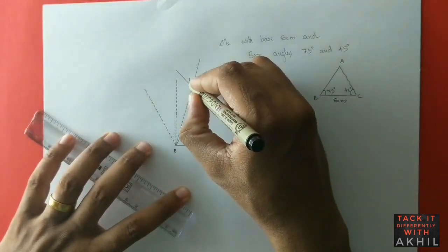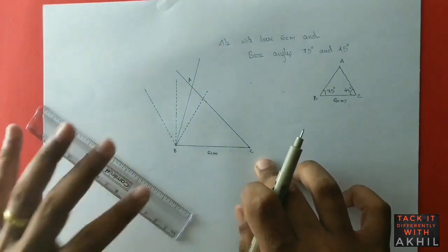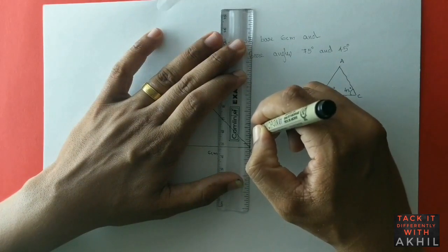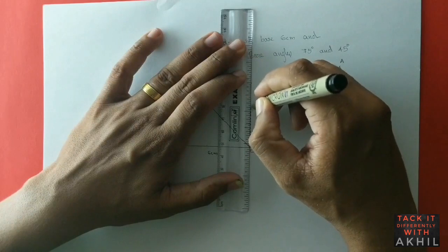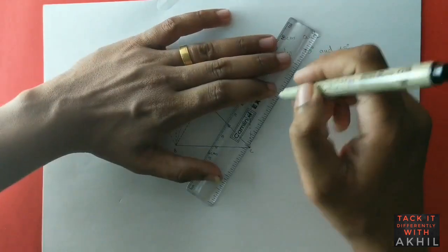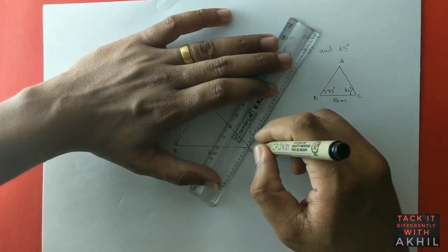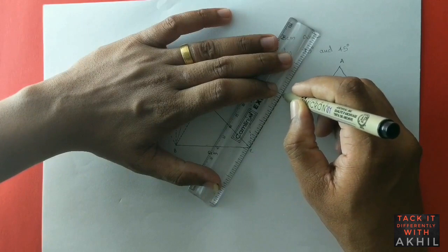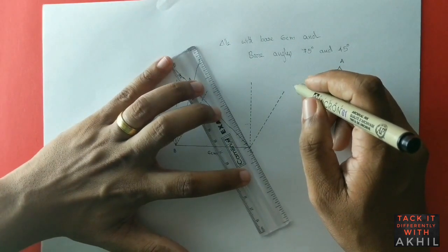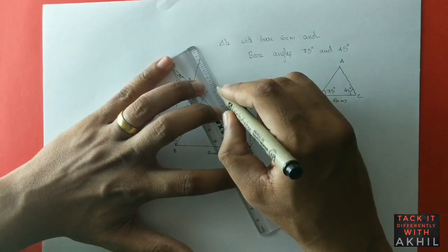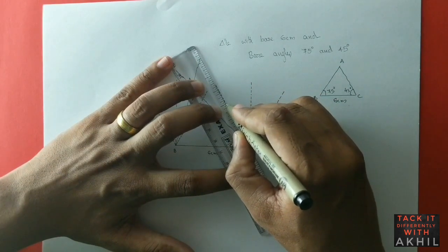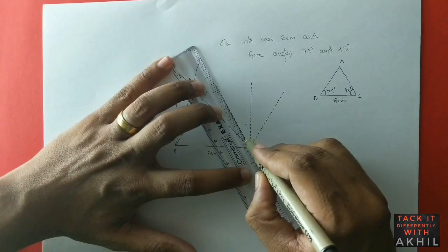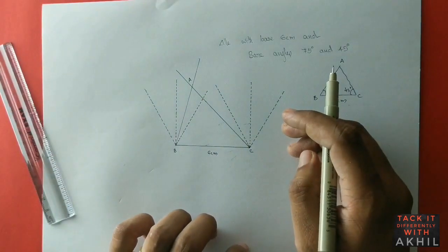The remaining construction points have to be connected using dotted lines. Remember, having patience is key — be patient, don't rush, because this will hardly take a minute or two. I'm already maybe three minutes in. Construction problems are usually four-mark or five-mark questions, so it's worth taking the time to do them properly.